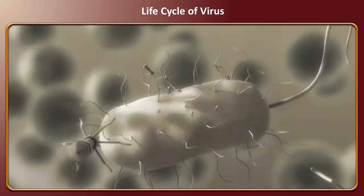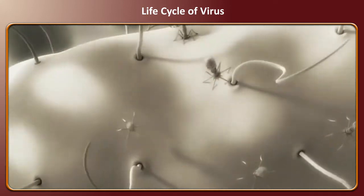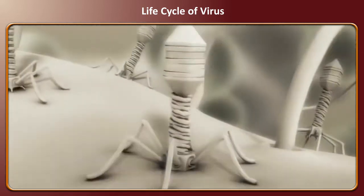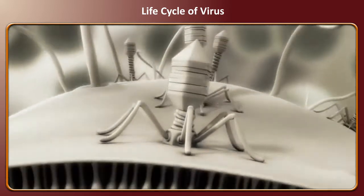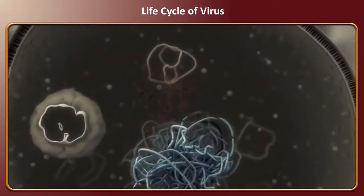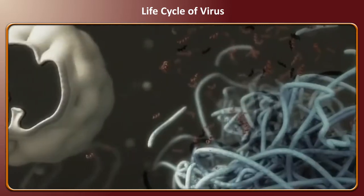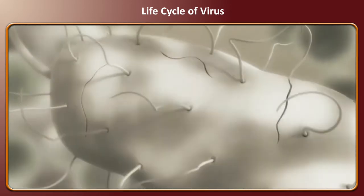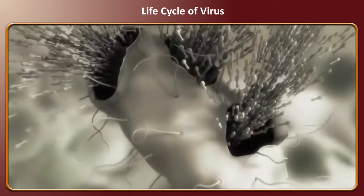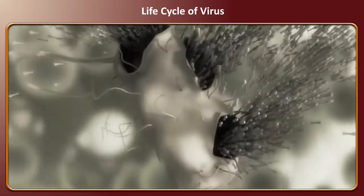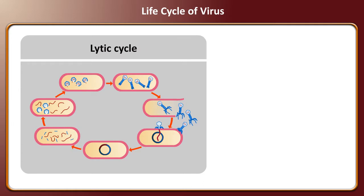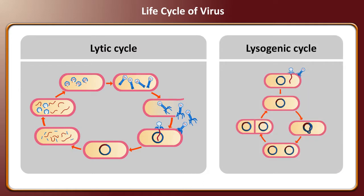Life cycle of a virus. Let us watch the life cycle of a virus. Viral reproduction occurs by two stages, namely the lytic cycle and the lysogenic cycle. The video explains the lytic cycle.